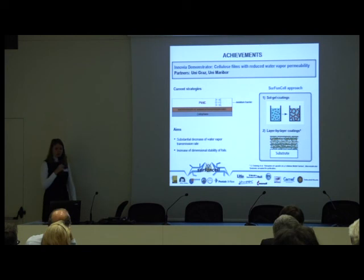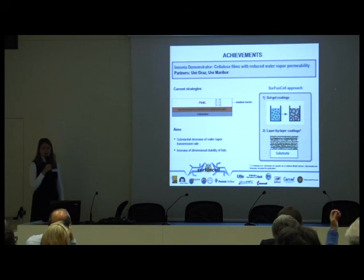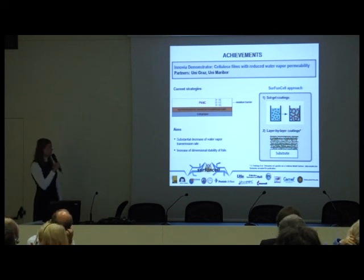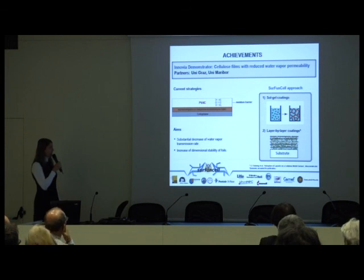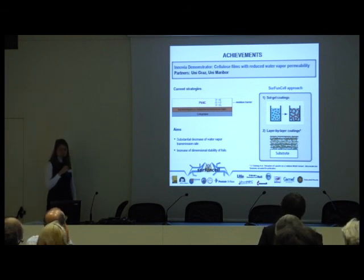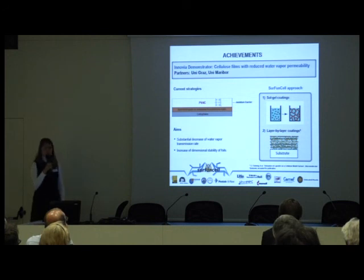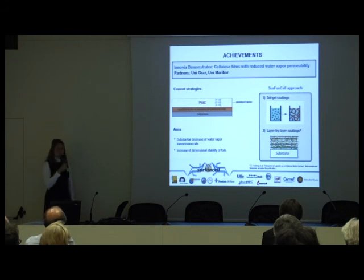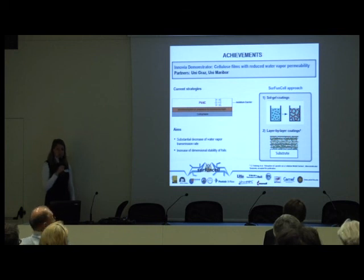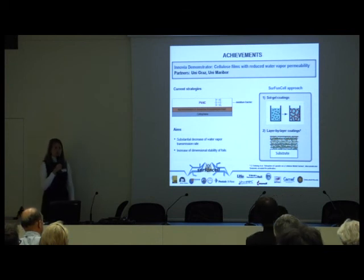Coming to the demonstrators, first are Innovia films, which would have reduced water vapor permeability. The current strategy for achieving this is coating cellophane with epichlorohydrin and melamine, and polyvinylidene chloride is applied as a moisture barrier — which is not environmentally friendly. Our aims are to achieve a substantial decrease in water vapor transmission rate and also to increase the dimensional stability of these foils, which are known to be highly swelling.